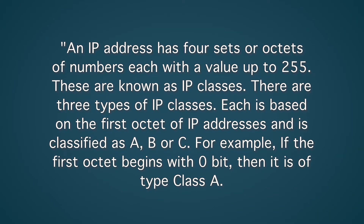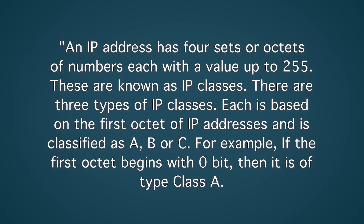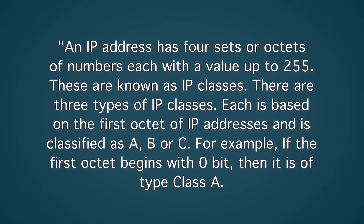As with most questions, keep your answers direct and be prepared for a follow-up question which the interviewer will use to explore the topic in more detail. An IP address has four sets or octets of numbers, each with a value up to 255. These are known as IP classes. There are three types of IP classes, each based on the first octet of IP addresses, classified as A, B, or C.